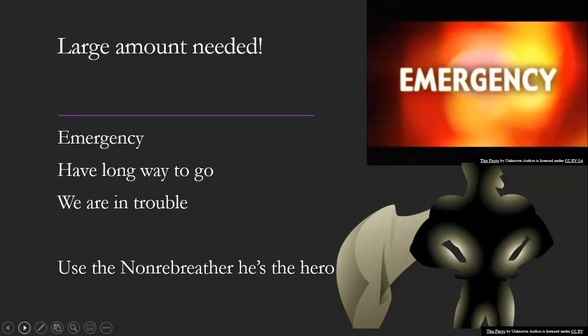On the other end — large amount needed. Why do we need a large amount? Things are not going well. This is a dire situation; there is an emergency, or our PaO2 is 37 on an otherwise normally healthy young person. We are in trouble. Then we reach for our one and only: the non-rebreather. He is the hero — he will fix this. Even if we're going to need a high flow device, throw the non-rebreather on while we're getting the high flow device ready. Those things don't set themselves up in two seconds.